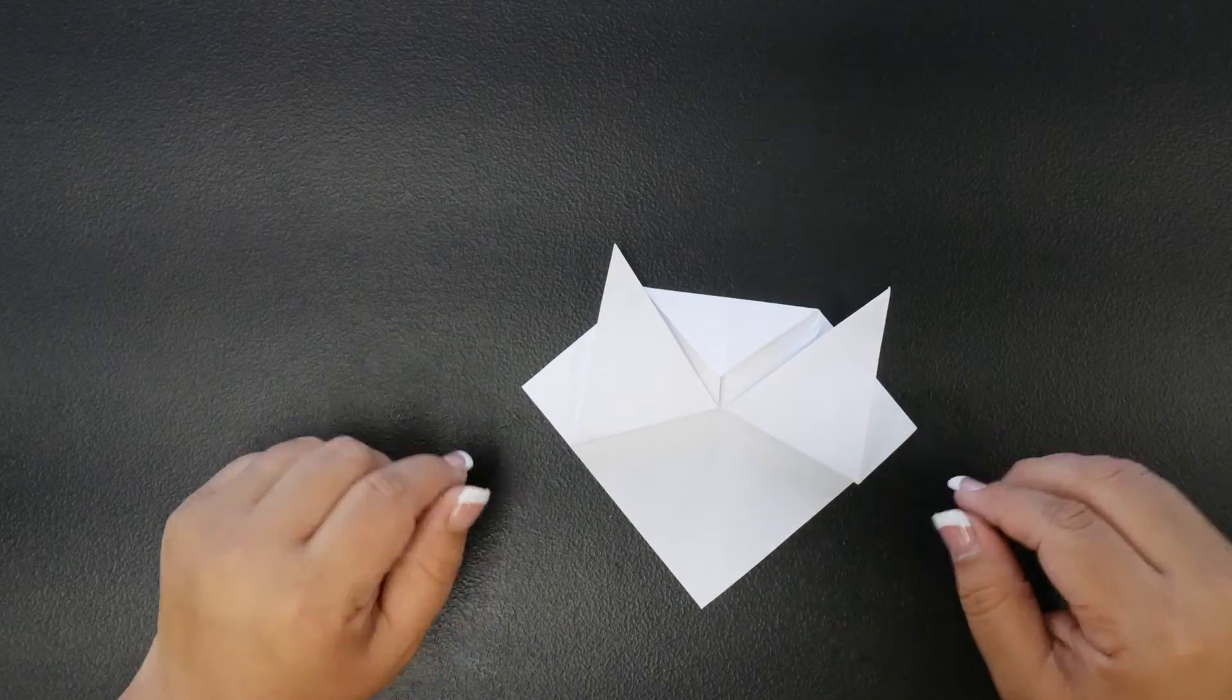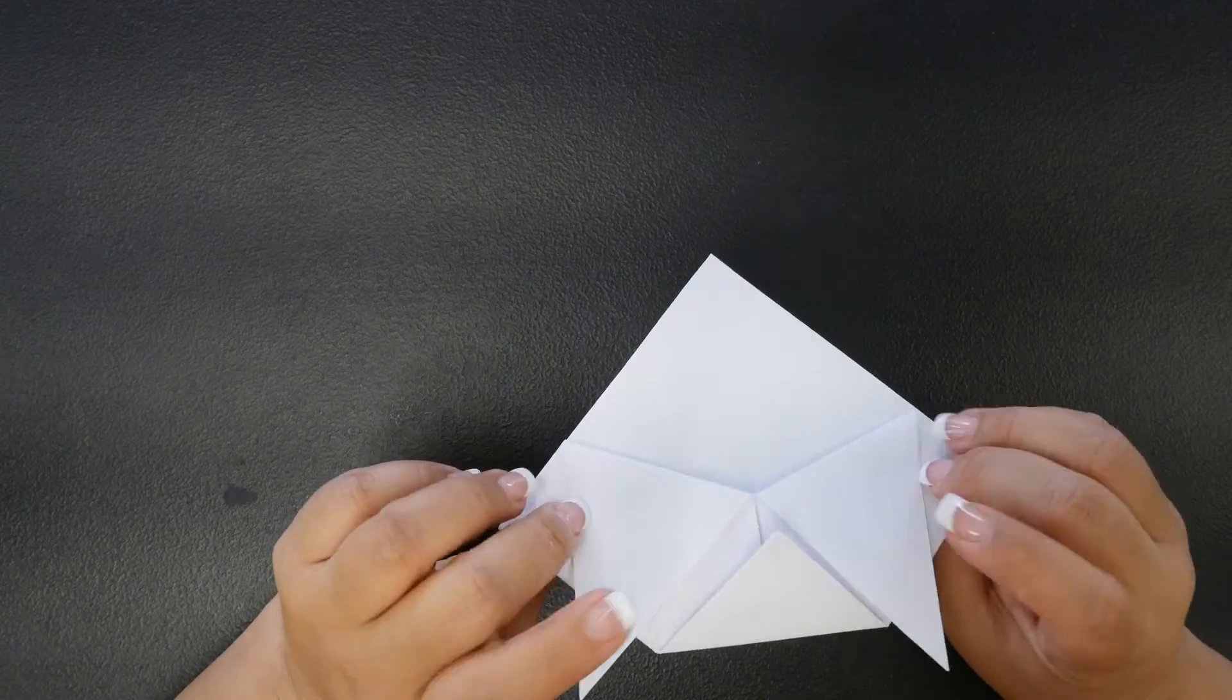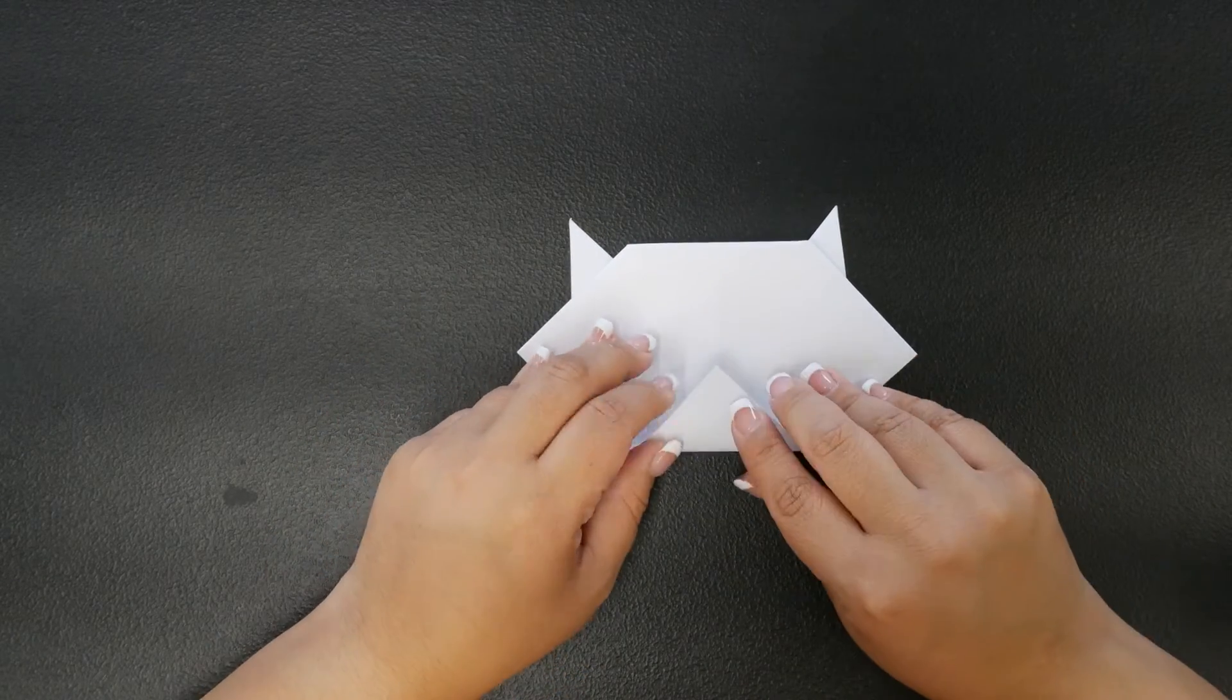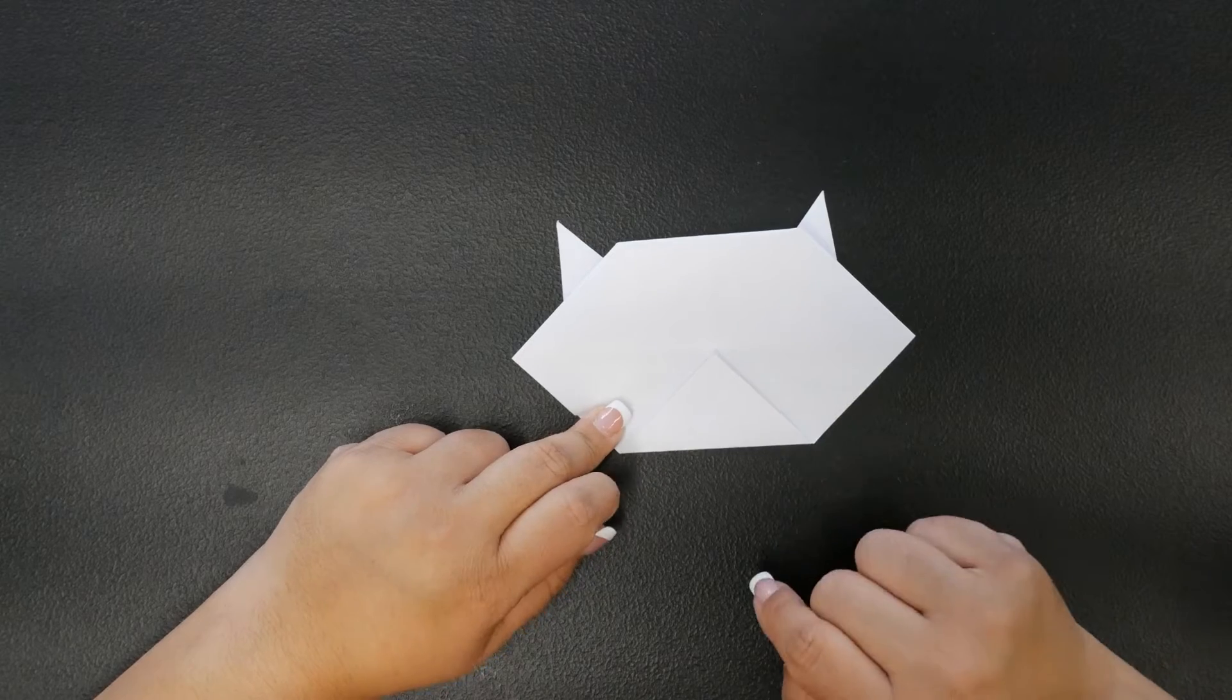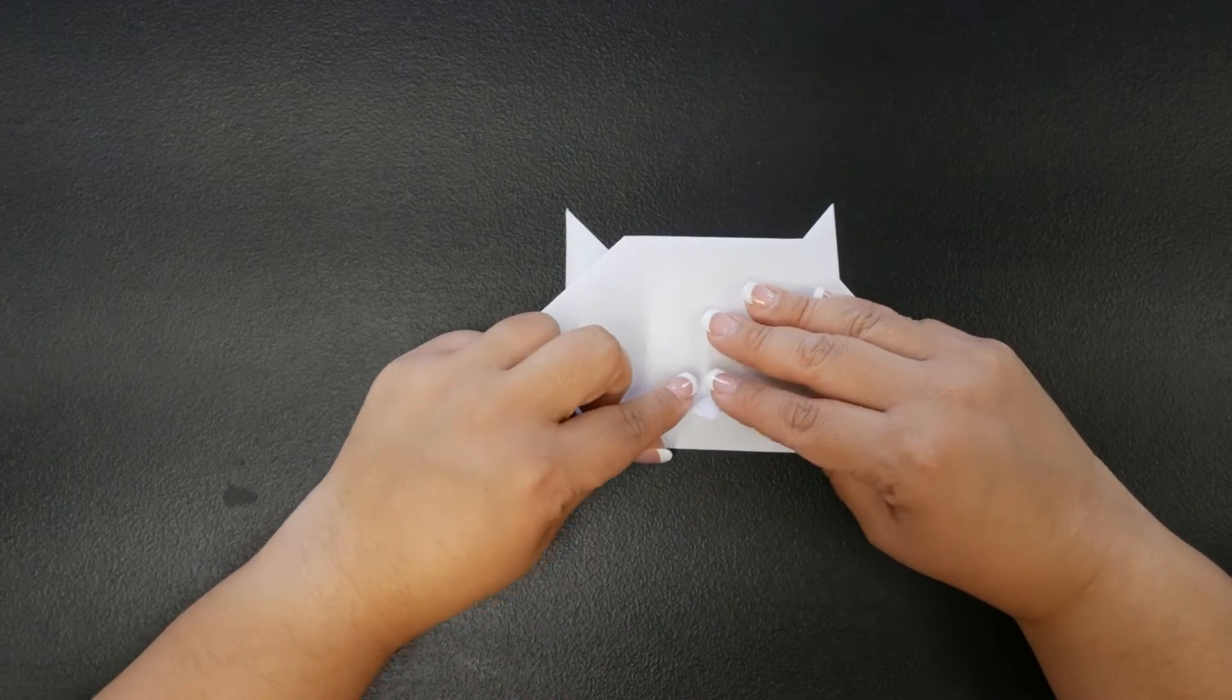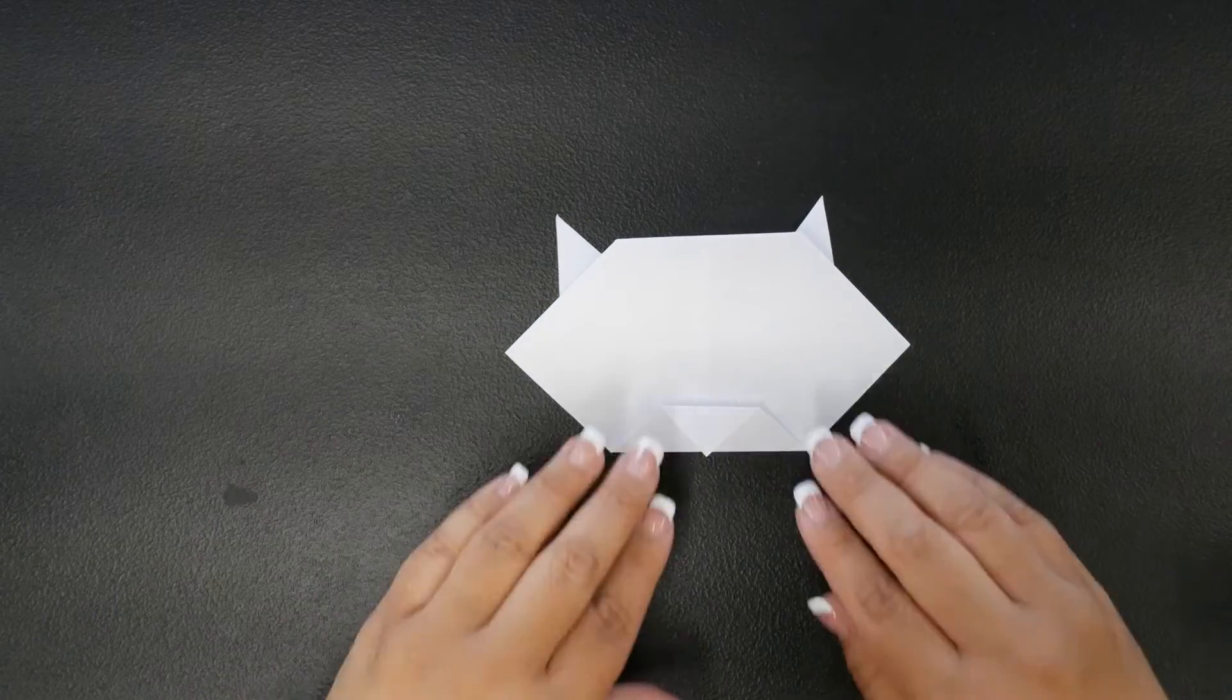Now we flip over here. Just like this. Now you can see where our folds are on the back here. You're going to bring this point here and align it to that point here. And then bring this back down to the bottom edge. This is his little nose. And there we go. We have our little raccoon.